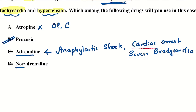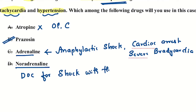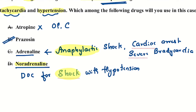Noradrenaline is the drug of choice for all shocks with hypotension — cardiogenic, neurogenic, hypovolemic, septic shock — but please remember, noradrenaline will not work in anaphylactic shock. If you know why, tell me in the comment section.